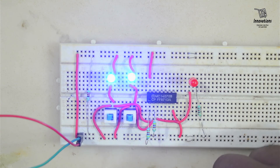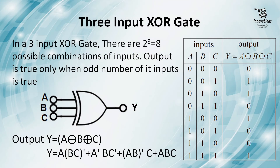Now we will learn about a 3-input XOR gate. There are 2 to the power 3 — that is 8 possible input combinations. The output is true only when an odd number of inputs is true, meaning when one or three inputs are true. Truth table: 0-0-0 → 0, 0-0-1 → 1, 0-1-0 → 1, 0-1-1 → 0, 1-0-0 → 1, 1-0-1 → 0, 1-1-0 → 0, 1-1-1 → 1. When an odd number of inputs are 1 the output is 1, otherwise 0.